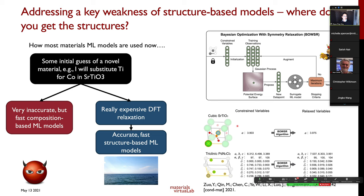This shows the effect of the BOWSER pre-relaxation step on ML predictions. We took a large number of Materials Project crystals, generated hypothetical versions by substituting atoms in the same structure prototype with other elements, creating a huge number of unrelaxed crystal structures. Without any relaxation, the ML model performs poorly — a mean absolute error of 300 meV/atom, almost useless for determining stability. With BOWSER pre-relaxation, we get down to about 88 meV/atom, which is much more useful.